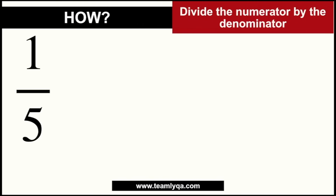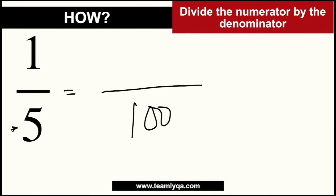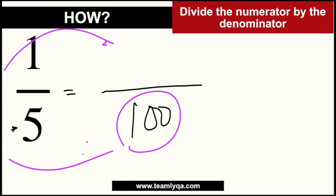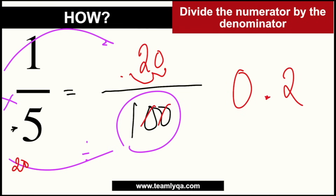Now, if you don't want to divide, there's another method — the ratio rotation concept. You can use this when 100 is divisible by the denominator. What you do is convert the fraction to over 100. So for 1/5: 100 divided by 5 is 20, times 1 is 20 — so this becomes 20 over 100. Then you move the decimal point two places: that gives you 0.2. If this method seems more complicated, just go back to division and divide the numerator by the denominator.